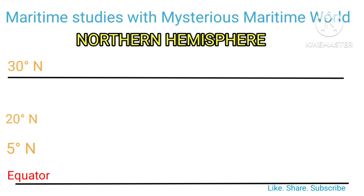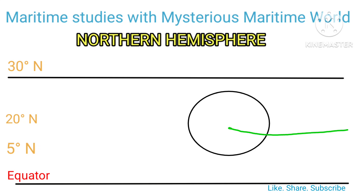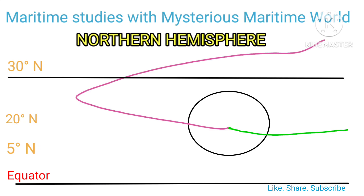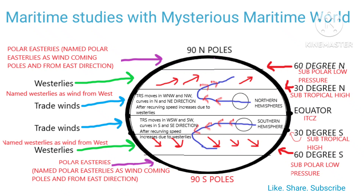A Tropical Revolving Storm forms in 5 to 20 degrees latitude north and south of the equator. In the Northern Hemisphere, a TRS moves in a west-northwest and northwesterly direction, then curves northward and recurves in a northeasterly direction, moving towards the oceanic high situated at around 30 degrees north. After recurving, due to the effect of westerlies, the speed of the TRS increases.